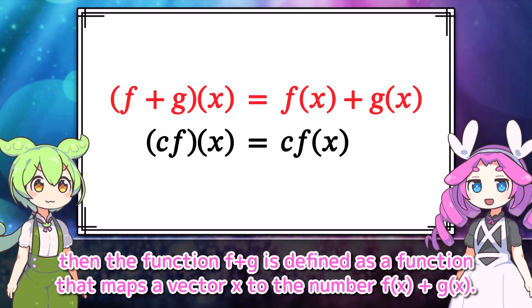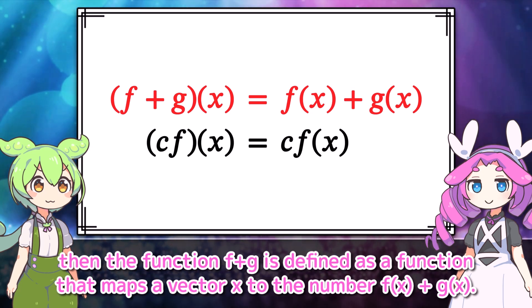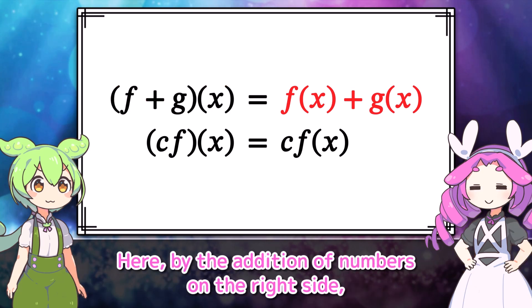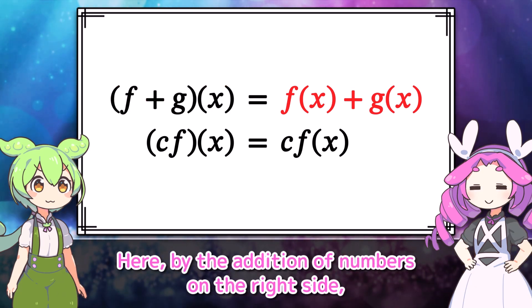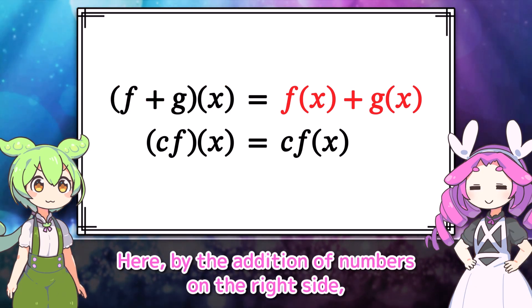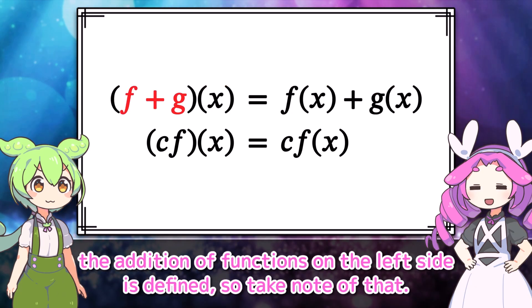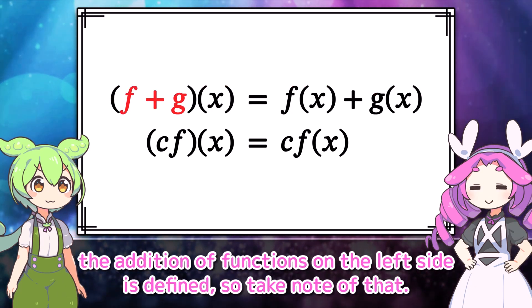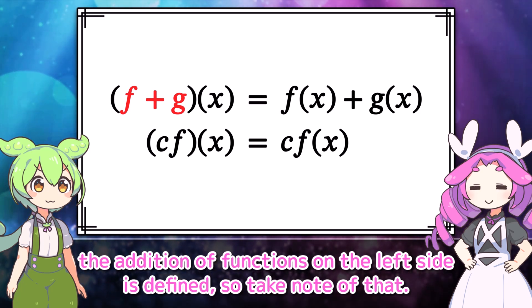Just like numerical vectors, functions can also be added together or multiplied by constants. For example, if f and g are functions that map vectors to numbers, then the function f plus g is defined as a function that maps a vector x to the number f(x) plus g(x). By the addition of numbers on the right side, the addition of functions on the left side is defined.